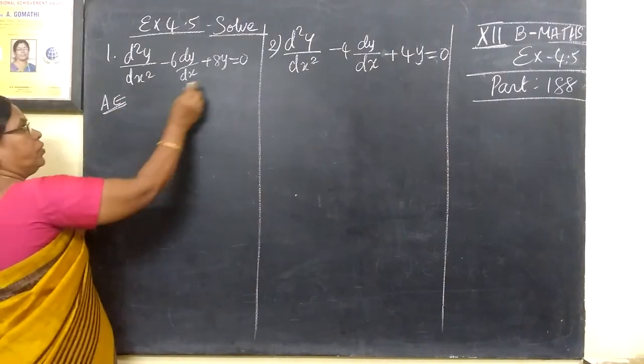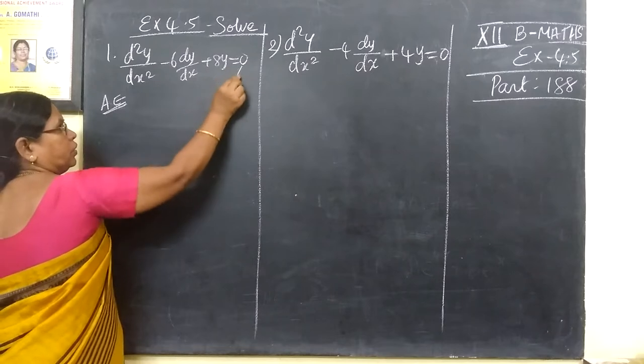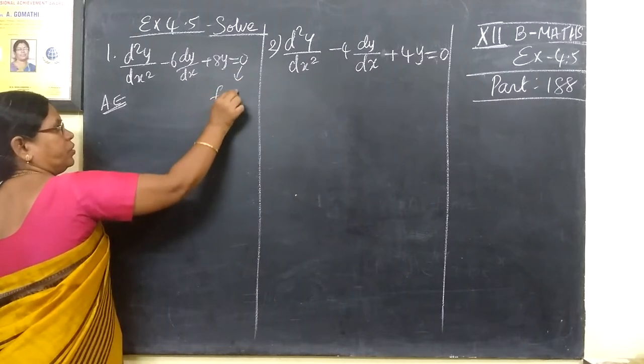Question number 1. There is f of x equal to 0.